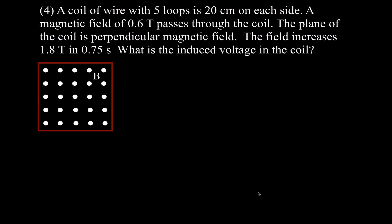Problem four: we have a coil of wire with five loops. The coil, shown as a red square in the diagram, is 20 centimeters on a side. There's a magnetic field — the dots represent the field coming out of the page — with an initial strength of 0.6 Teslas passing through the coil, which is perpendicular to the field. The field then increases from 0.6 Teslas to 1.8 Teslas over a given period of time, and we want to know the induced voltage.